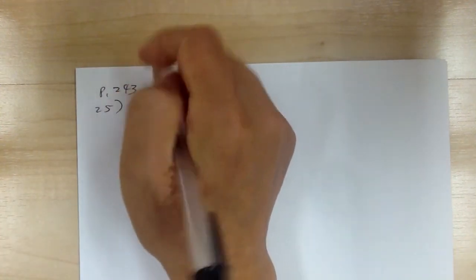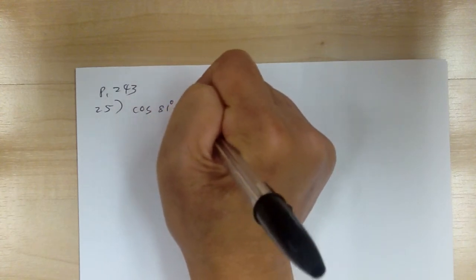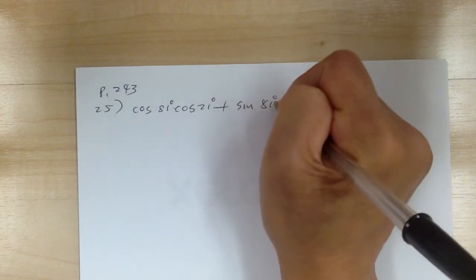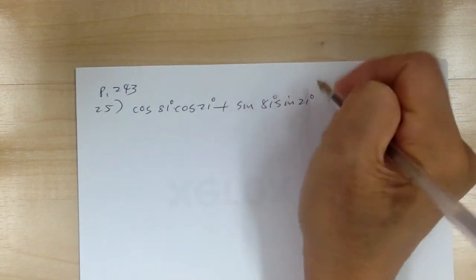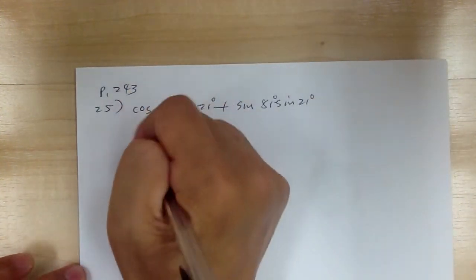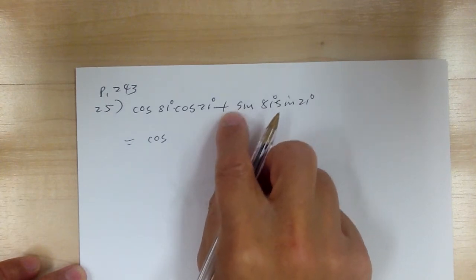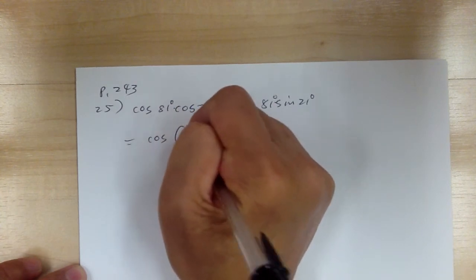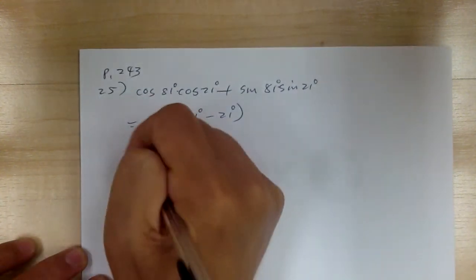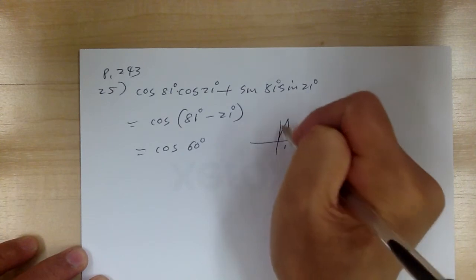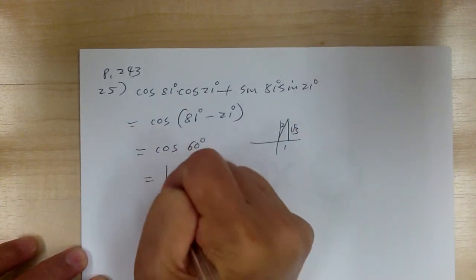Let's go to 25. You have cosine of 81 degrees, cosine of 21 degrees, plus sine of 81 degrees, sine of 21 degrees. When you have cosine, cosine, plus sine, sine — that's a cosine function, and the cosine difference identity has the opposite sign. So with addition here, you get a subtraction: it's equal to cosine of 81 degrees minus 21 degrees, which gives cosine of 60 degrees, and cosine of 60 degrees equals 1 half.